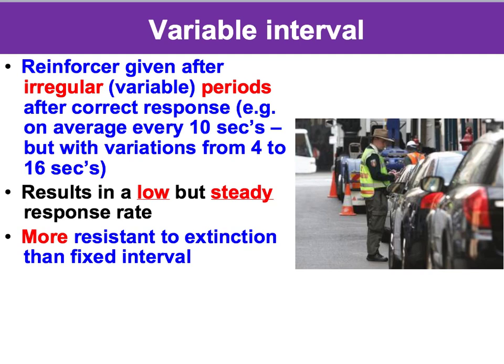Variable interval provides a reinforcer after an irregular period of time in which the correct response has been made. It produces the lowest response rate, but due to the unpredictability of the timing of the delivery of the reinforcer, it's a steady response rate. Your classic example is fishing — let's say you have your favourite fishing spot and you average catching two fish an hour. You might have a good stretch where you catch five fish in 15 minutes, and then you could have an eight-hour day where you get nothing. Because of the unpredictability of the timing of the reinforcer, your motivation is steady — your response rate in terms of casting out, putting your bait on, is steady.